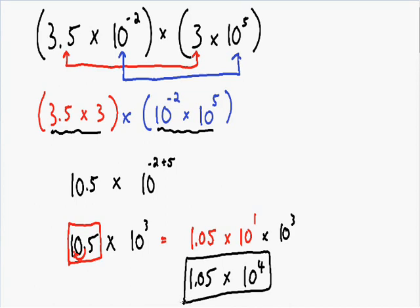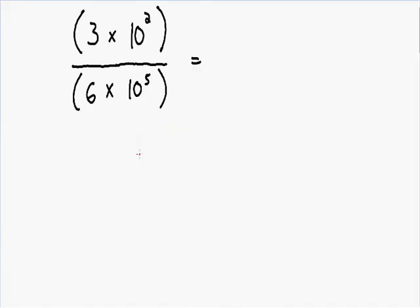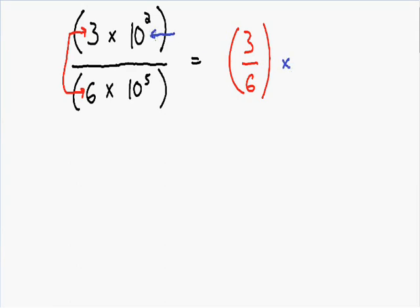So now let's go over another example where we divide in scientific notation. Here we have 3 times 10 to the second being divided by 6 times 10 to the fifth. With division, our first step is dividing the constants. So we have our constant of 3 divided by our other constant of 6, giving us 3 over 6. Our next step is to divide our base tens: 10 to the second divided by 10 to the fifth.